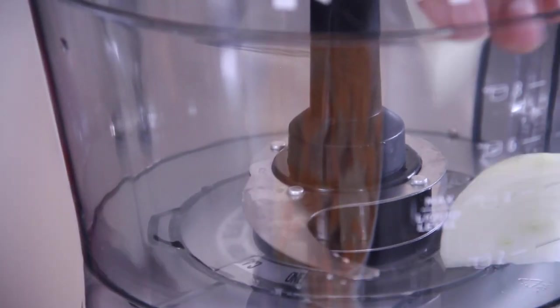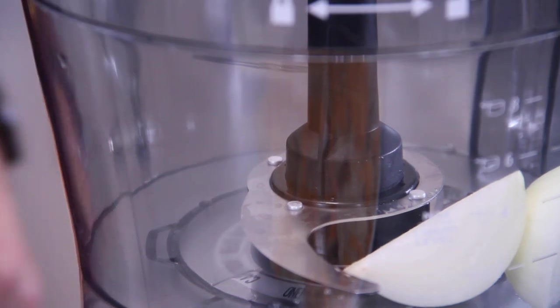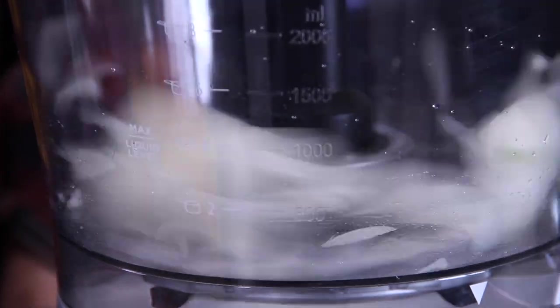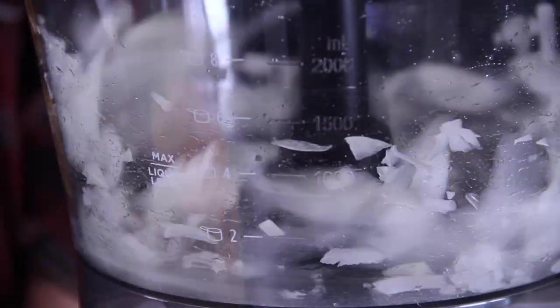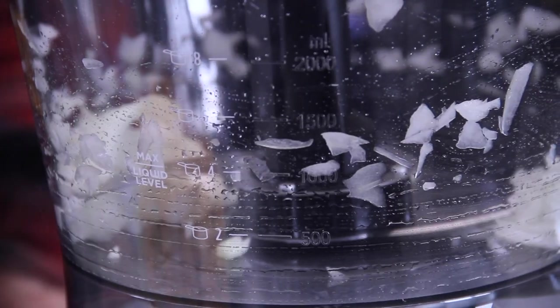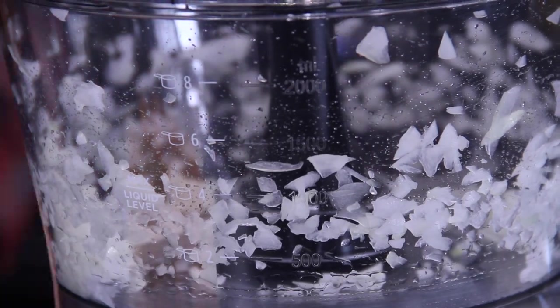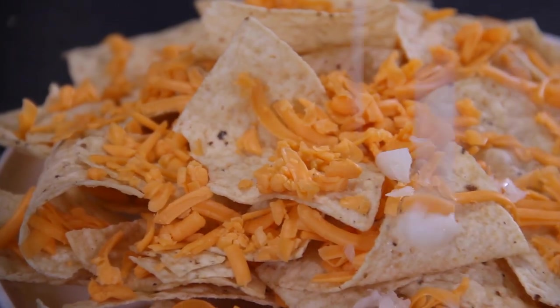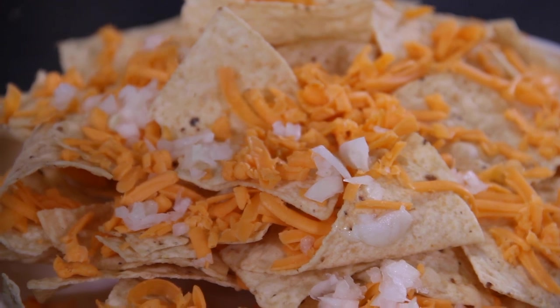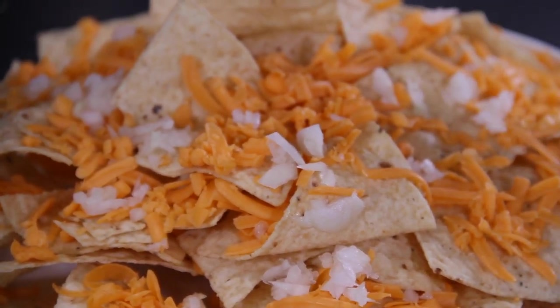Next up, in with half an onion that I've quartered up, now I'm going to use the chopper blade. And just go ahead and chop this up. You guessed it guys, we're going over the top of that cheese with those grated onions and this looks so good.